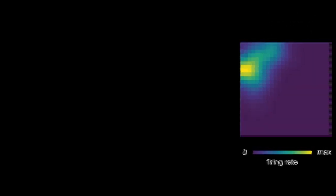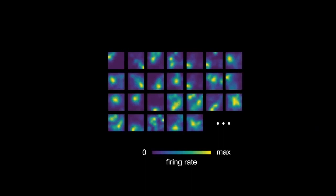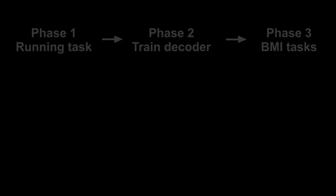Using the place field activity from many hippocampal neurons, we can train a decoder that accurately estimates the animal's current location from ongoing hippocampal neural activity.